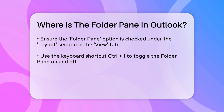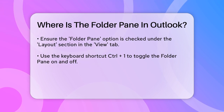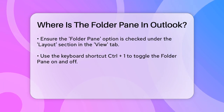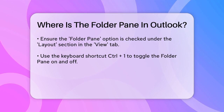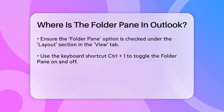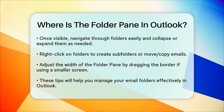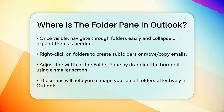Once the folder pane is visible, you can easily navigate through your email folders. You can expand and collapse folders by clicking the plus or minus signs next to them. You can also right-click on any folder to create new subfolders, move or copy emails, and perform other actions.